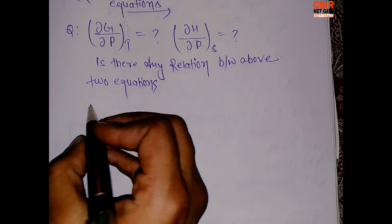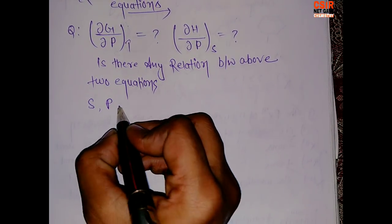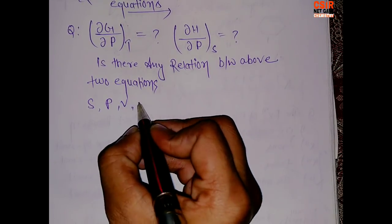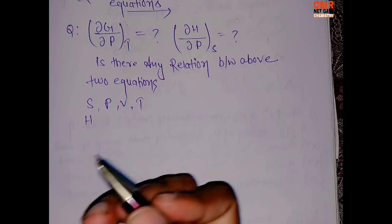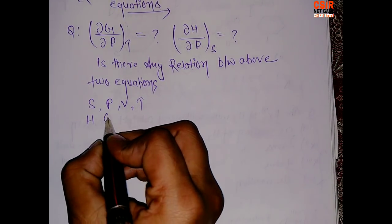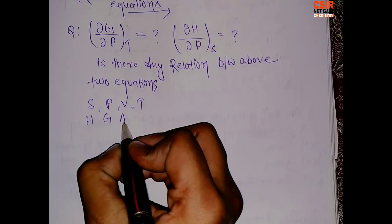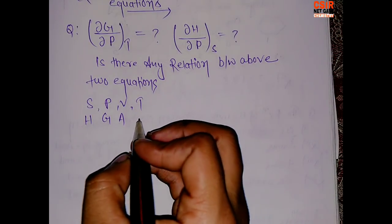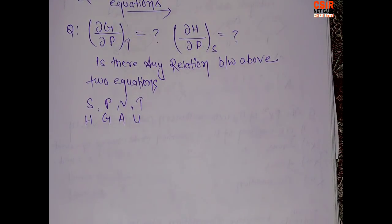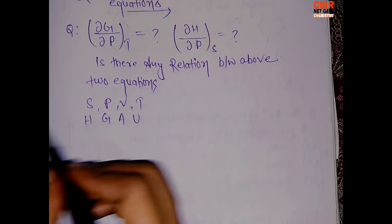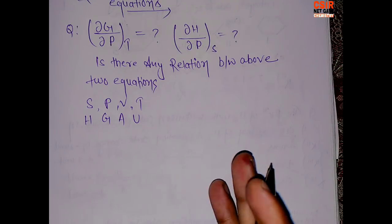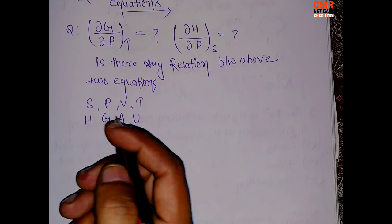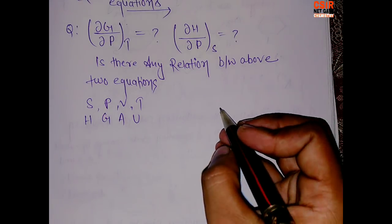In thermodynamics we have entropy, pressure, volume, temperature, and we have energies like enthalpy, Gibbs free energy, Helmholtz energy, and internal energy. We have to figure out some relations among these parameters. Basically we have a thermodynamic square which tells the relationship between all these parameters.